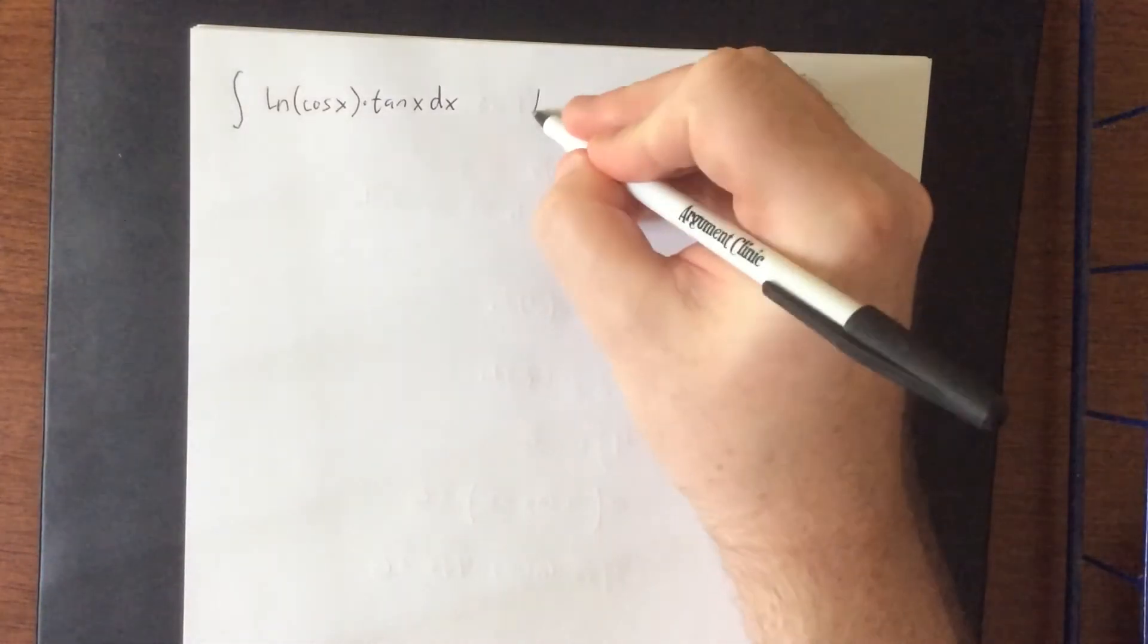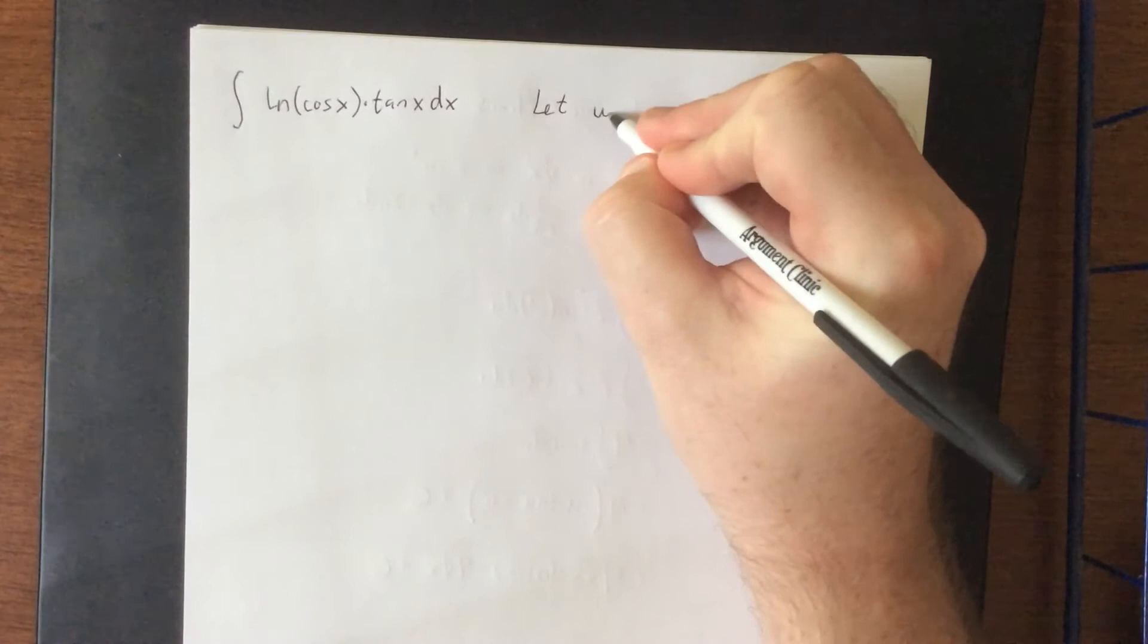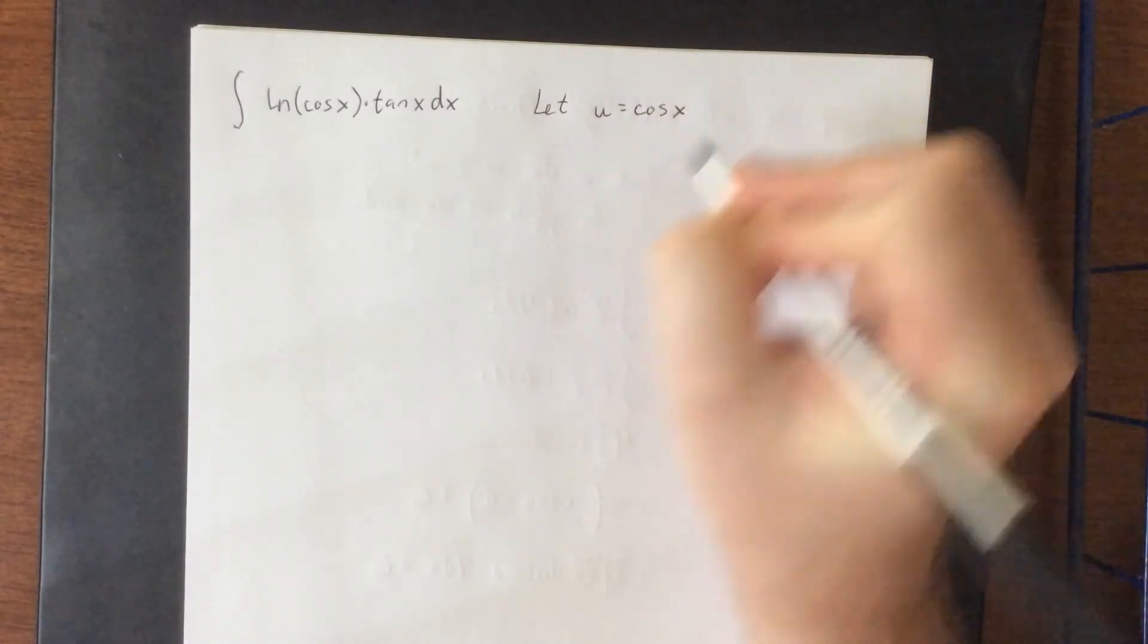I wanted to try out one more. And I wanted to try it out actually a couple different ways. Here's the integral of the natural log of the cosine of x times the tangent of x dx. Now it might seem pretty apparent what you might want to use for a substitution here, since we do have a composition of functions. Let u be equal to the cosine of x.